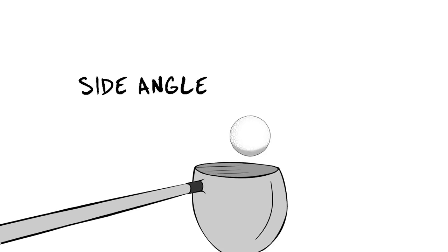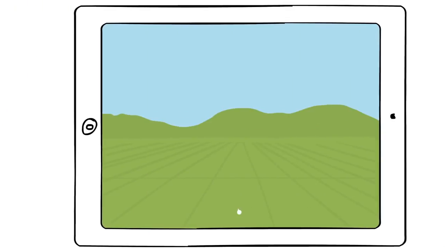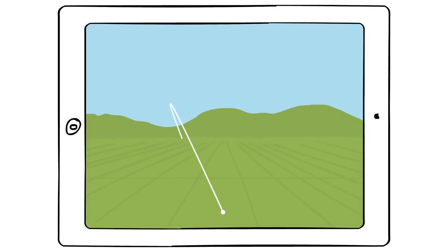Side angle is the horizontal angle or direction the ball travels in relation to the target line as the ball is leaving the club face. How does it work? Too much side angle causes the ball to travel further offline to the target, causing a push or a pull. With less side angle, your shot is more accurate and travels closer to the intended target line.